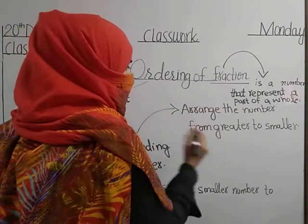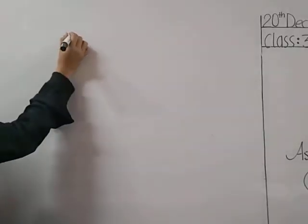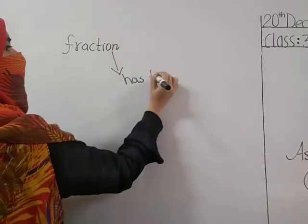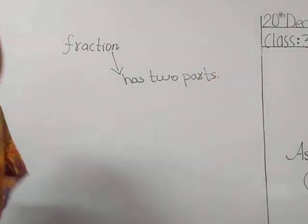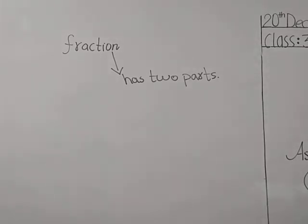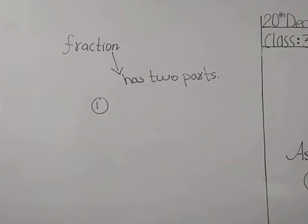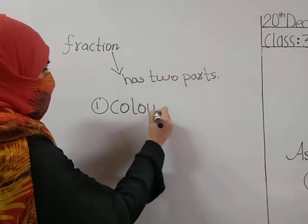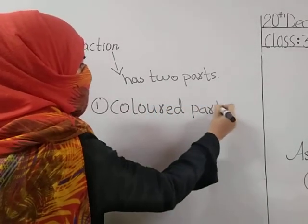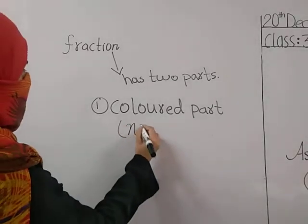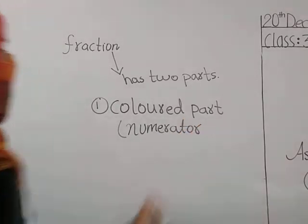So now fraction has also two parts. Zishan, you tell me what is the first part and what is the second part? Yes, the first part is the colored part, and we call that the numerator. The spelling of numerator is N-U-M-E-R-A-T-O-R. Numerator.